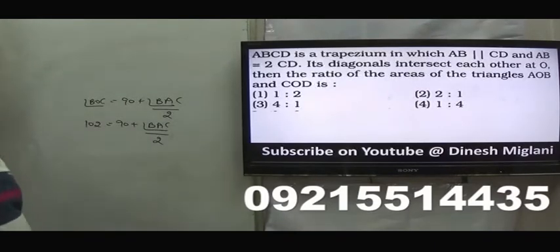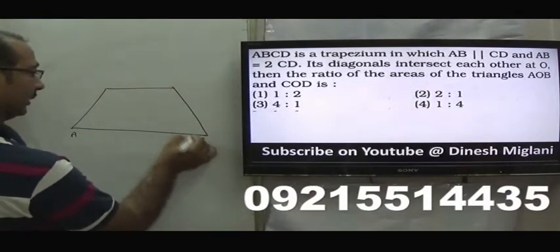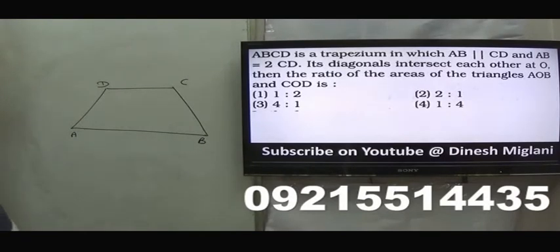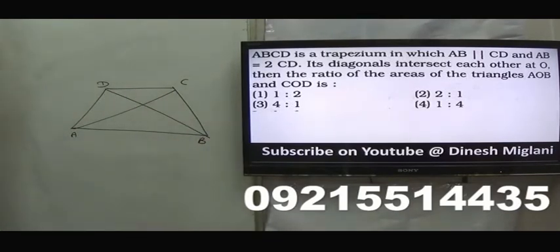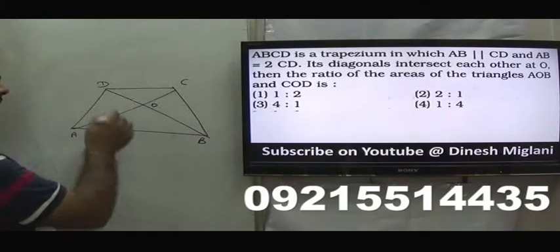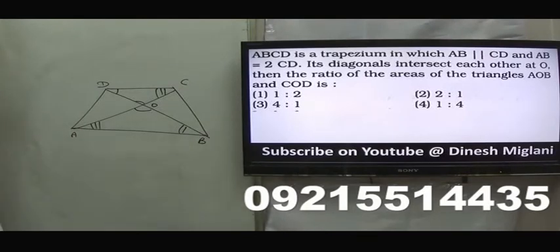Next question: ABCD is a trapezium where AB is parallel to CD, and AB = 2·CD. The diagonals intersect at O. Find the ratio of area of triangle AOB to area of triangle DOC. Triangles AOB and DOC are similar because AB ∥ CD gives equal alternate angles and vertical opposite angles are equal. The ratio of sides is 2:1, so the ratio of areas is 4:1. The third option is my answer.